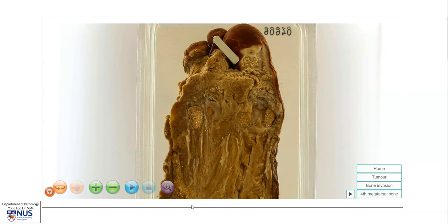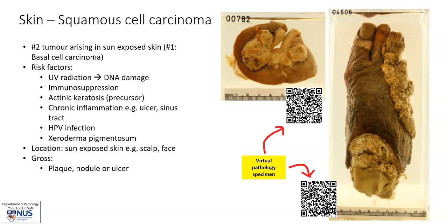Let's learn a bit more about squamous cell carcinoma. This is the second commonest tumour arising in sun-exposed skin, second only to basal cell carcinoma. The risk factors include UV radiation, immunosuppression, actinic keratosis — which are precursor lesions to squamous cell carcinoma — chronic long-standing inflammation, for example in chronic ulcers or in the presence of a sinus tract, HPV infection, and genetic conditions such as xeroderma pigmentosum.